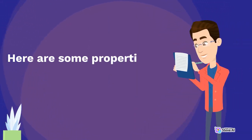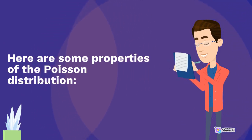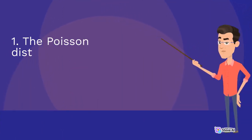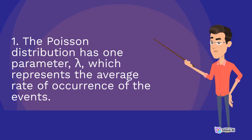Here are some properties of the Poisson Distribution. 1. The Poisson Distribution has one parameter, lambda, which represents the average rate of occurrence of the events.